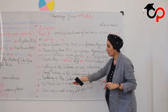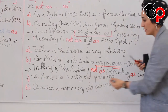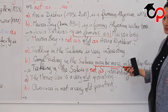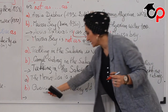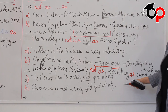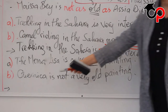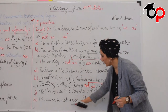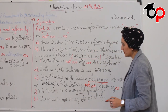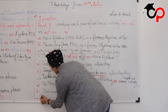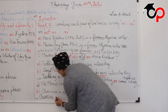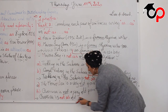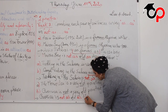For the last example: the Mona Lisa is a very old painting, painted by the very famous Leonardo da Vinci. Guernica is not a very old painting. So we use the comparative of inferiority: Guernica is not as old as the Mona Lisa painting.